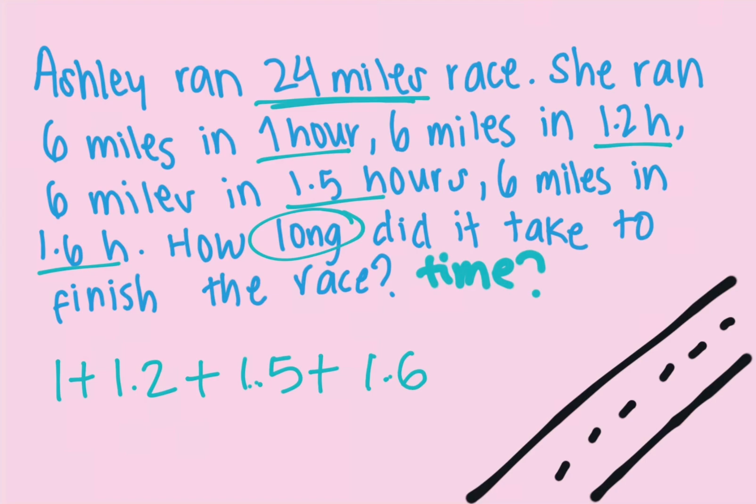You can do it by hand or use the calculator. In every question in the HISET there is going to be a calculator right next to the question. Put that in the calculator and you will get 5.3 hours.